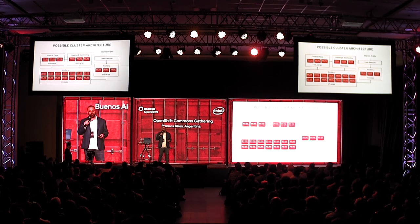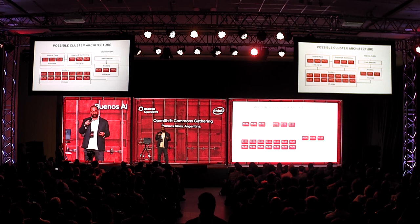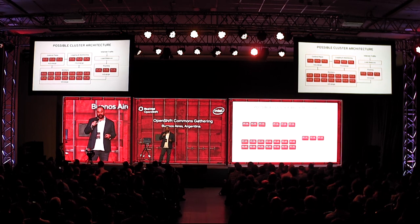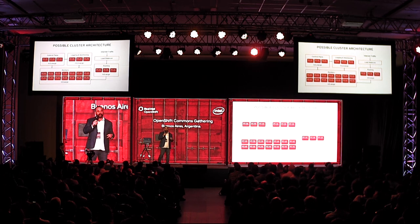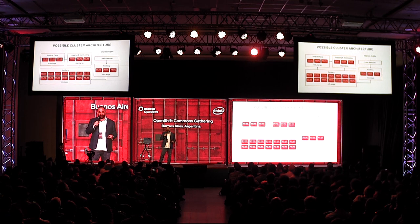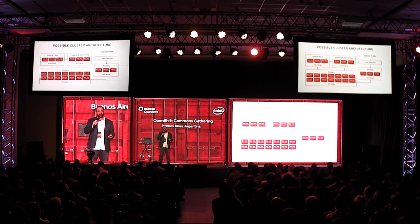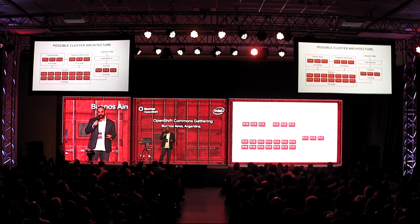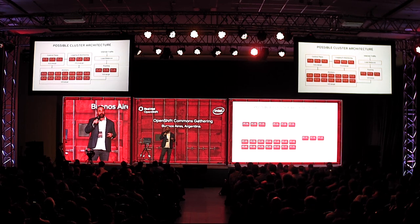Here's a possible architecture diagram for AWS. We have a control plane with three masters. For logging and monitoring, we use R5 2XLarge instances — high-performance machines chosen for the throughput, memory, and CPU those applications need. Routing and worker nodes are both M5 Large but separated into different machine sets, because routing machines may need higher security as they're directly exposed to the internet, giving them a different profile even though it's the same machine type.